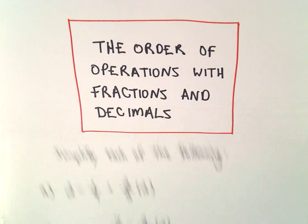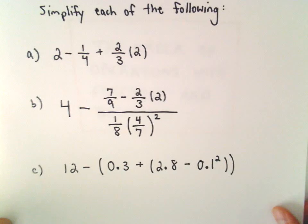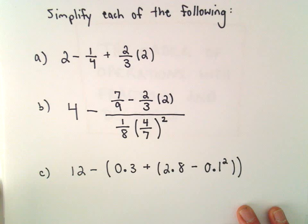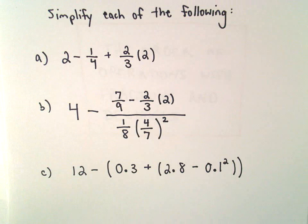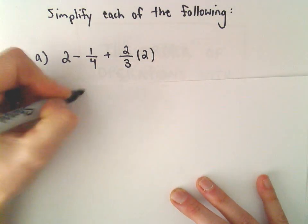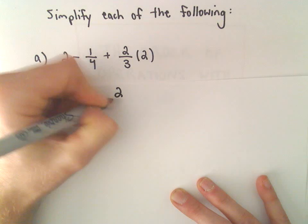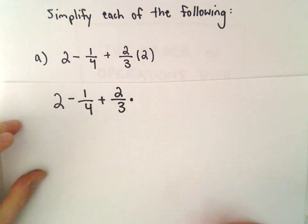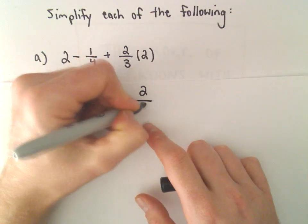Here we're going to look at some examples using the order of operations, and we're just going to simplify some numerical expressions involving fractions and decimals. Let's start here with part A. We've got 2 minus 1 fourth plus 2 thirds times 2. I'm going to write 2 as a fraction — as 2 over 1.